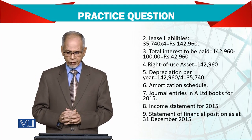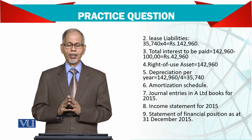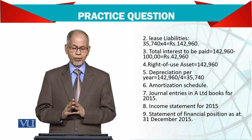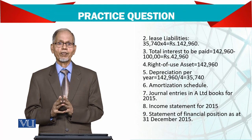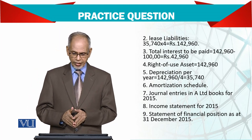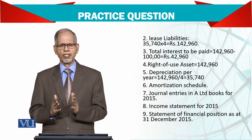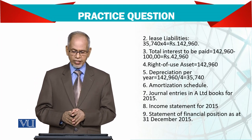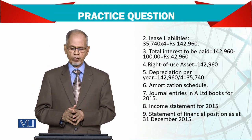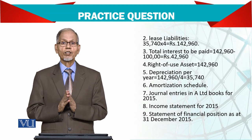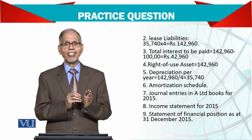Next we need to prepare the amortization schedule — a very important step. If you work it out correctly, everything else follows easily; errors here will spoil the whole solution. Then we prepare general journal entries in A Limited's books for 2015 only, not for all four years. Finally, we prepare the income statement for 2015 and the statement of financial position as at 31st December 2015 — just the portions relating to the leased asset.